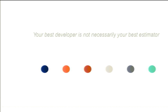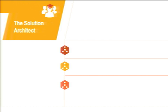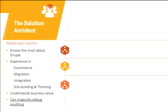The next lesson is that your best developer is normally not your best estimator. At ProMet we have solutions architects — our technical team leads. There are a lot of great things about your unicorn or hero architect: they know the most about Drupal, have vast experience, can do front end and back end, understand business value and minimum viable product, and can probably debug anything in about three minutes. That's really great, but they're normally missing a couple of things.